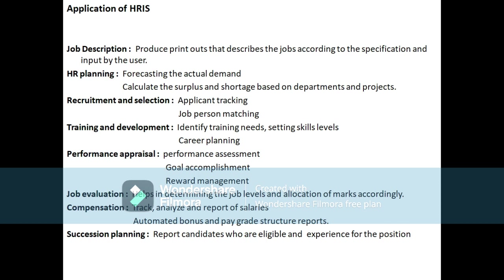Coming to applications of HRIS — where can this system be applied? The first application is job description. Under job description, HRIS produces printouts that describe the jobs according to specifications input by the user. Job description describes the job — what it is, the qualifications required, how to do the job, and all aspects under the job, including the roles and responsibilities. These specifications are given by the user.